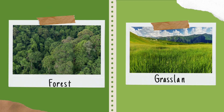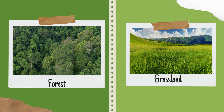Coming to the first one, forest. A forest is an area of land dominated by trees and animals that live in coordination with the abiotic factors of the environment.